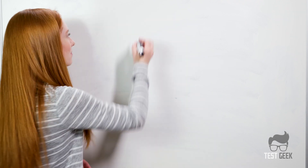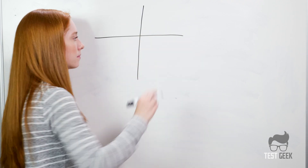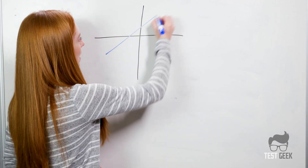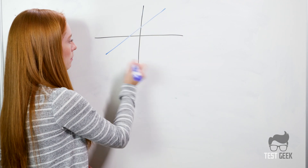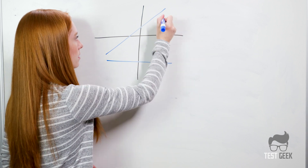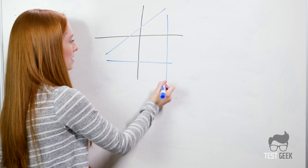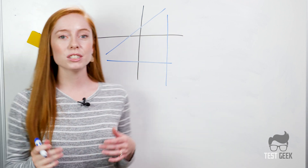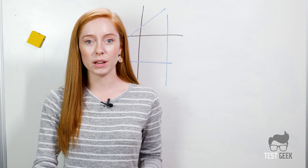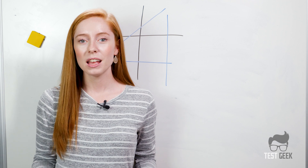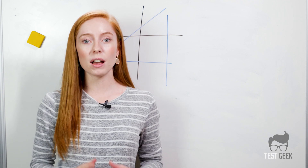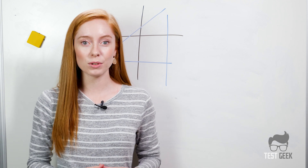Linear equations have variables with no exponents. So when you graph them, they look like a line — something like this, or maybe like this, or even like this. And when you're solving linear equations, you could have just one variable, but sometimes you have multiple variables.